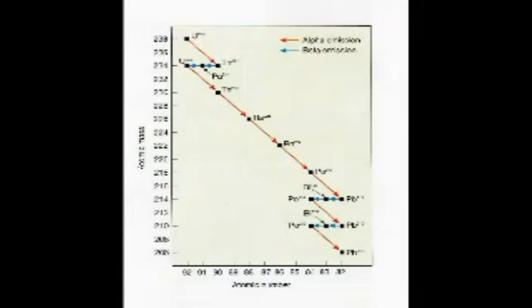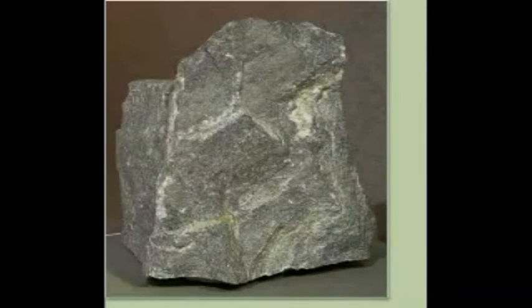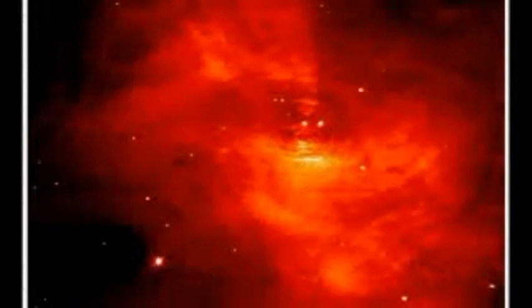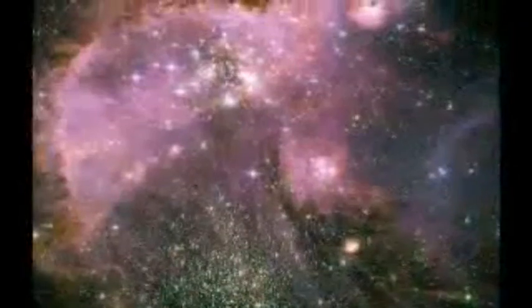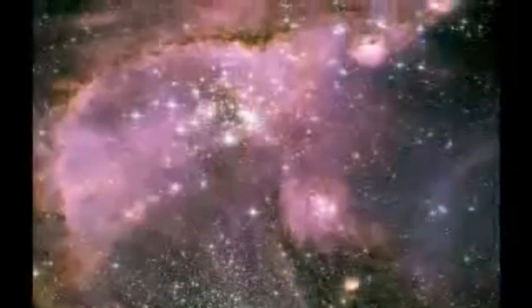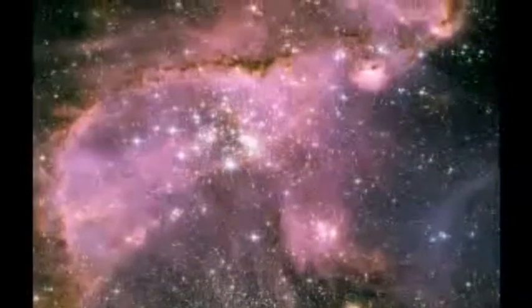Radiometric dating takes us back to the oldest rocks we found on Earth, 3.8 billion years old. If you want to go back even further, you have to look into space. A companion video, The History of the Universe Made Easy, explains how we can calculate the age of stars and galaxies.